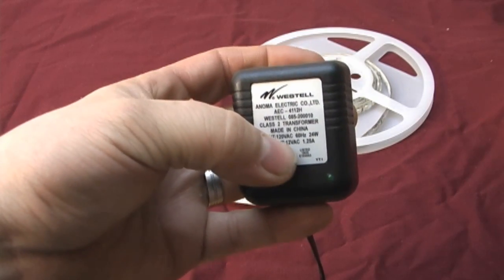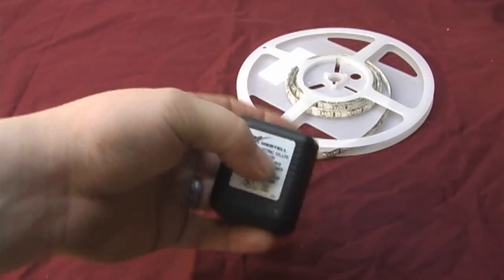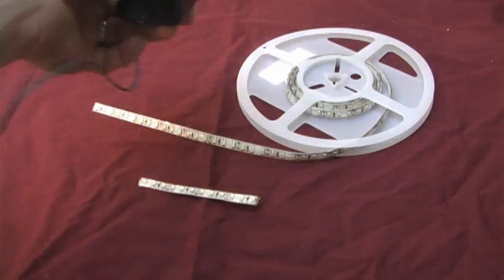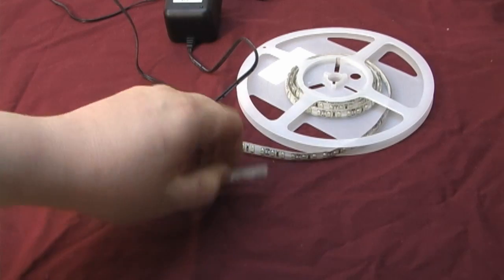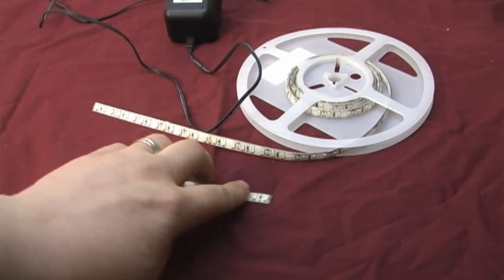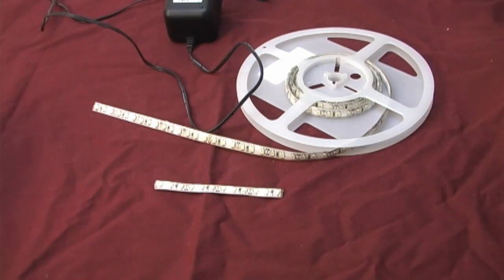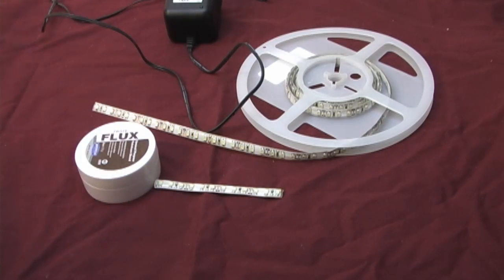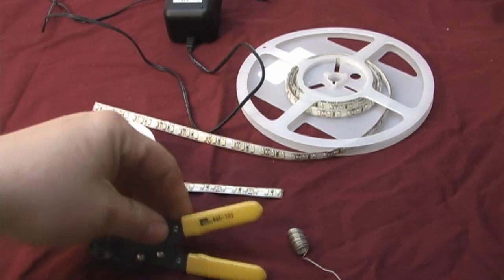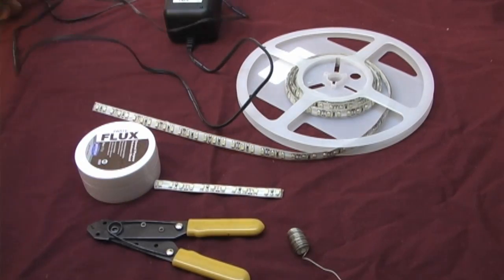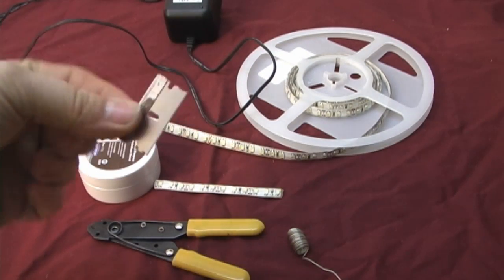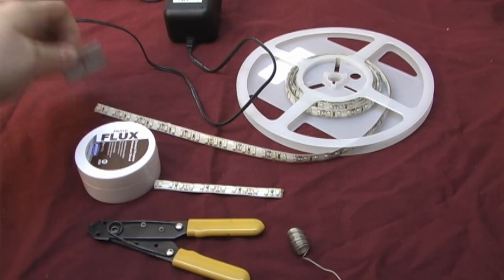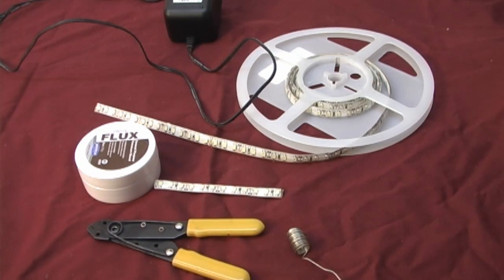Nine to twelve - it's a 12 volt strip so you can run nine to twelve. Don't go any higher, it makes the strip, the actual backing where the electricity runs through, real hot and possibly melt it. Of course you'll need some flux and solder, wire strippers to strip the end of the cord, a sharp razor blade to trim the end of the contacts, and the soldering iron.